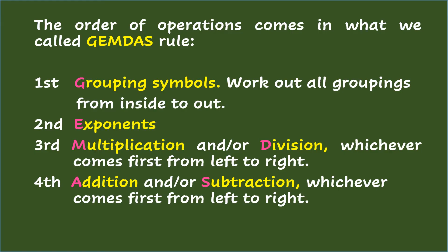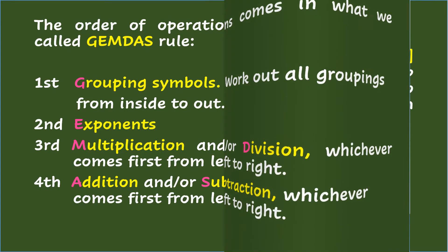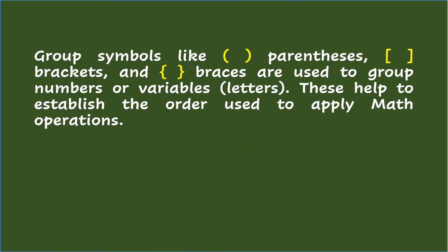Fourth is A and S, which stand for addition and or subtraction, whichever comes first from left to right. Grouped symbols like parentheses, brackets, and braces are used to group numbers or variables. These help to establish the order used to apply math operations.